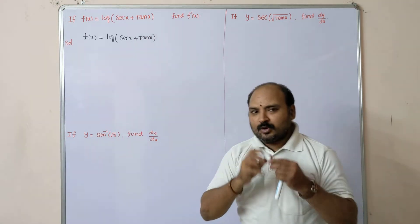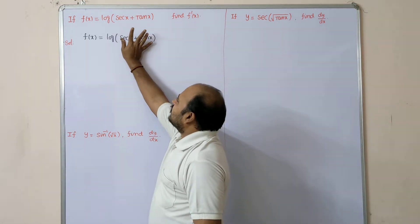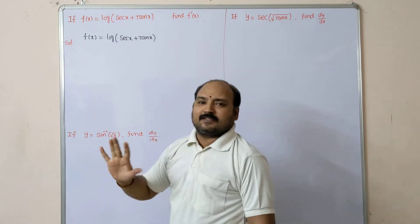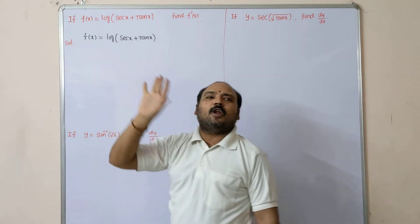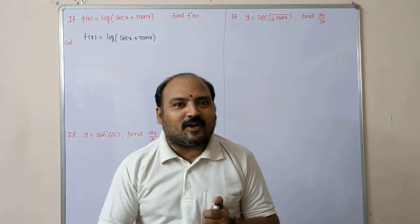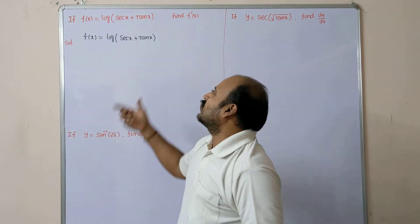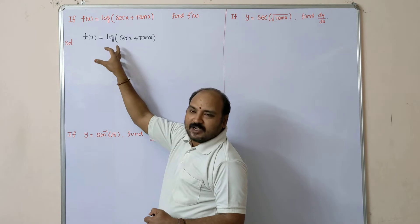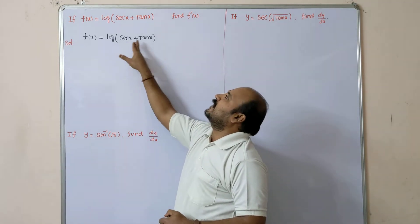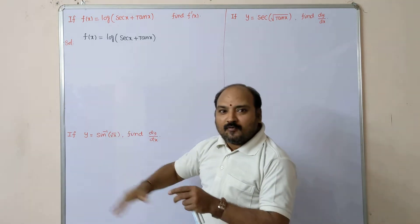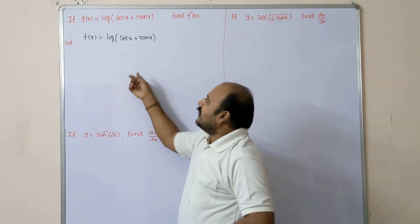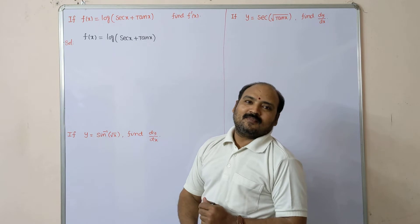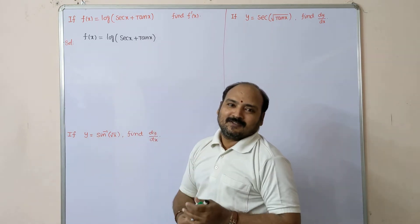Find f'(x). Dear students, remember — whatever function is involved inside the log, you treat it as x. So indirectly it is in the form of log(x). What is d/dx of log(x)? It is 1/x. So in place of x, the function is sec x + tan x. If you differentiate this you will get 1/(sec x + tan x), but you cannot stop there — each and every term you have to differentiate.